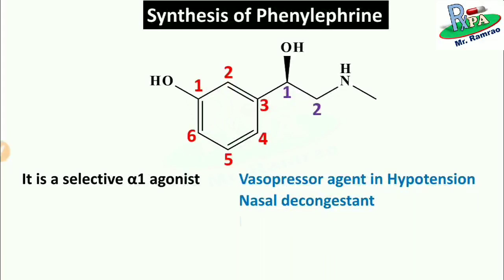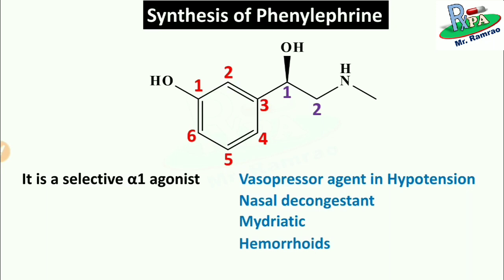Phenylephrine is also used as a mydriatic. Mydriasis is the dilation of the pupil of the eye. Phenylephrine binds with alpha-1 receptors present on the iris dilator muscle, which stimulates the dilator muscle for pupil dilation. Importantly, phenylephrine produces mydriasis without affecting the accommodative ability of the eye — that is, without cycloplegia. Phenylephrine is also used in the treatment of hemorrhoids, presumably to narrow the swollen veins and relieve the attendant pain.